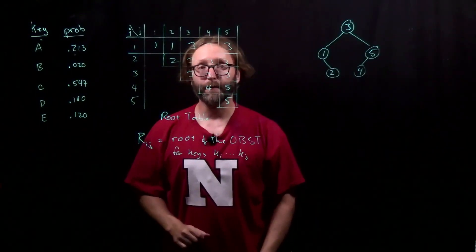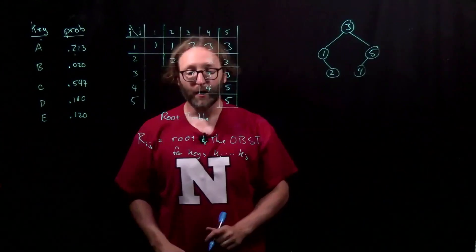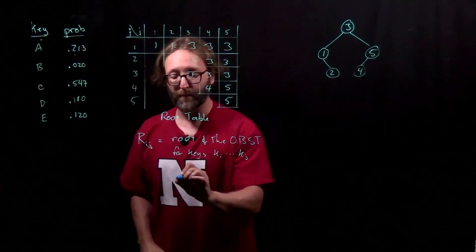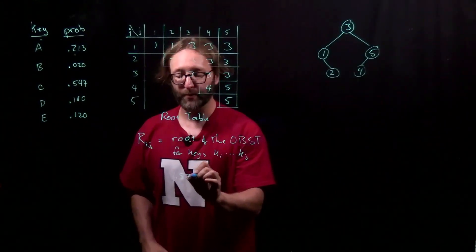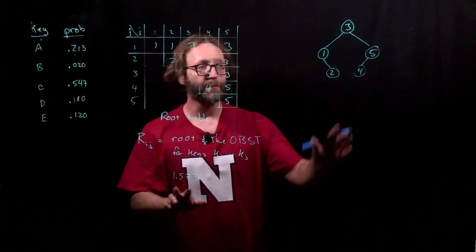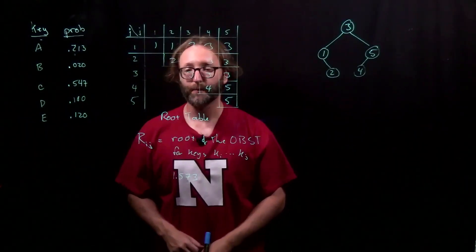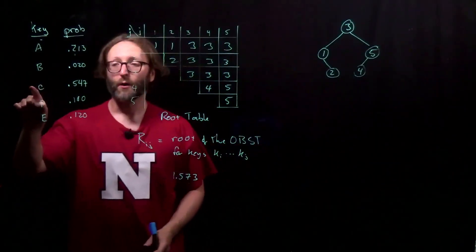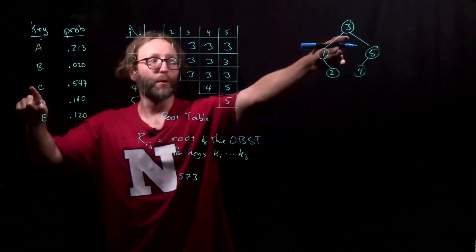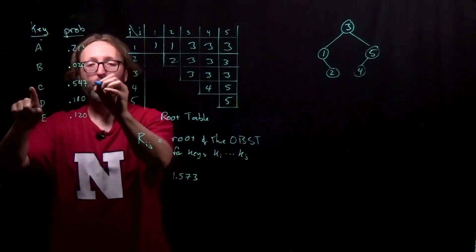Now let's go ahead and verify that answer from before. If you recall, it had a value of 1.573. That's the average number of key comparisons for this constructed tree. Let's verify it. For C, being at the root, there's only one comparison. For A, there would be 2 comparisons.